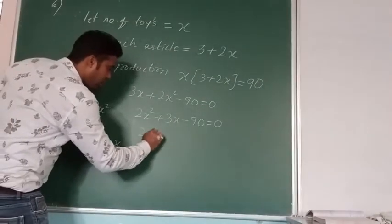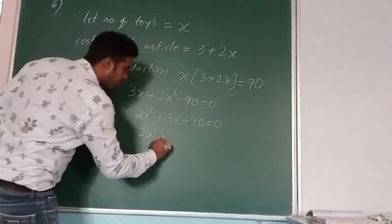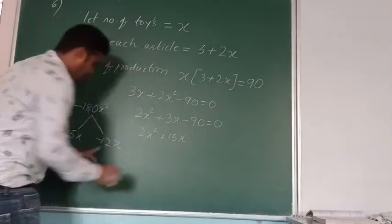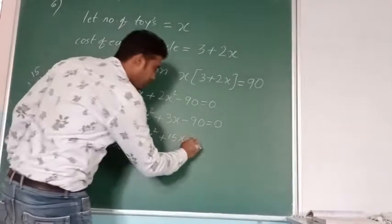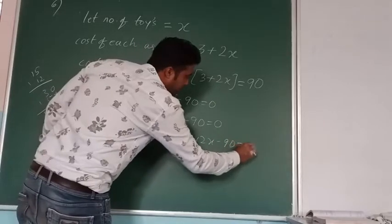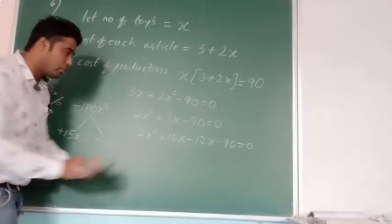These two I am going to replace here. It becomes 2x squared plus 15x minus 12x minus 90 equals 0. You know next what to do.